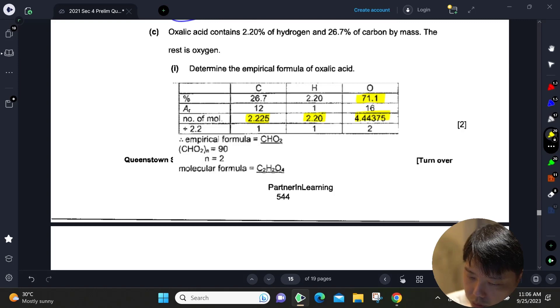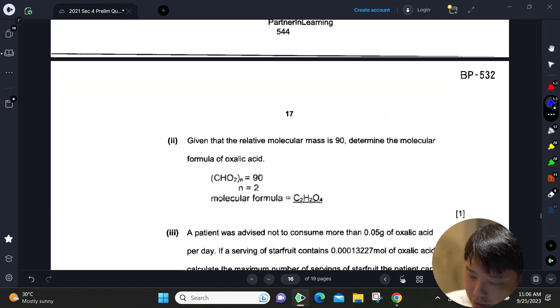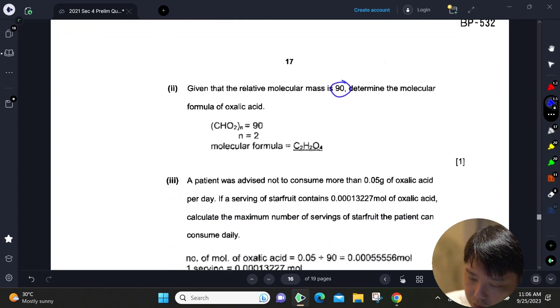The ratio for the empirical formula is shown here. This is actually the working for the next part on molecular formula. Given that the Mr is 90, we work it out: 12 + 1 + 32 = 45. So n has to be 2, which equals 90. This is our molecular formula as determined by the relative molecular mass.